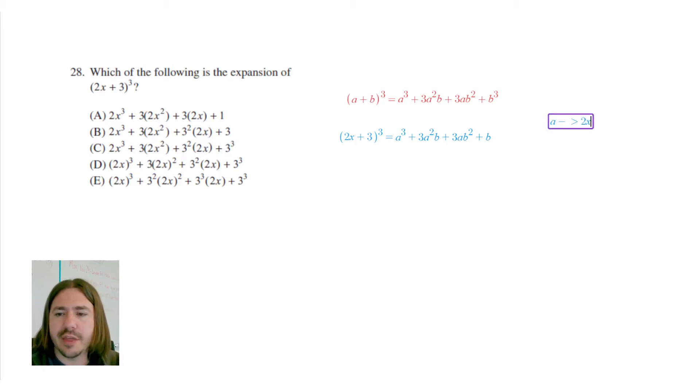and then my b is going to be 3. Okay, so maybe I'll just say equals because that doesn't really look much like an arrow.